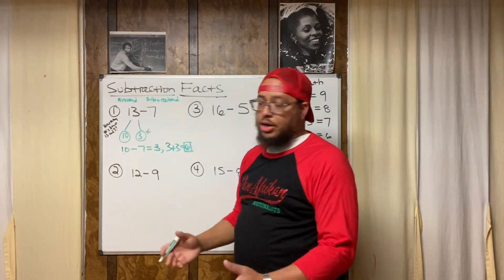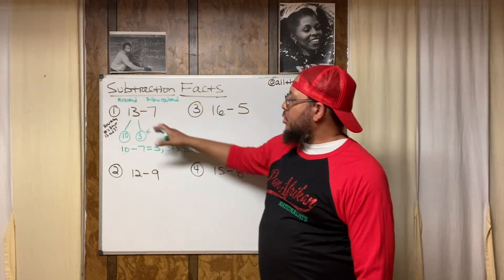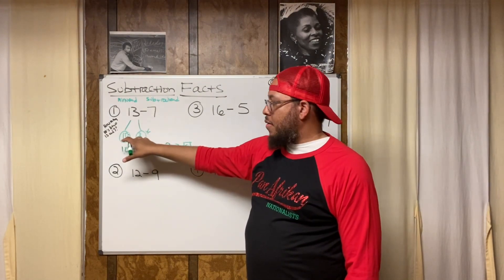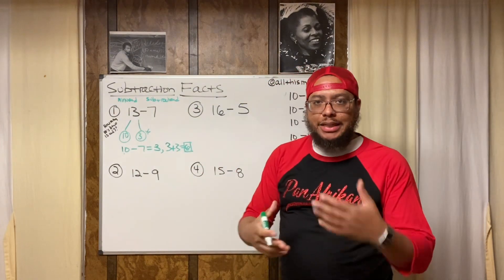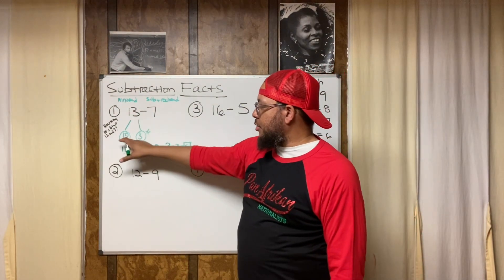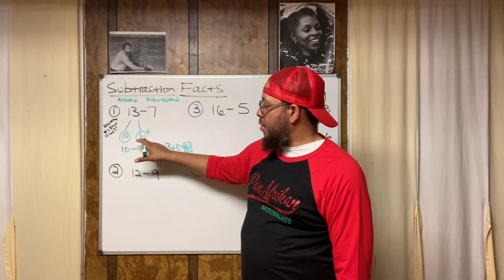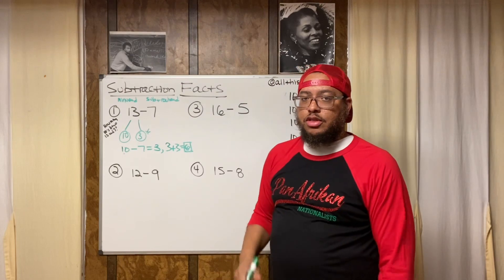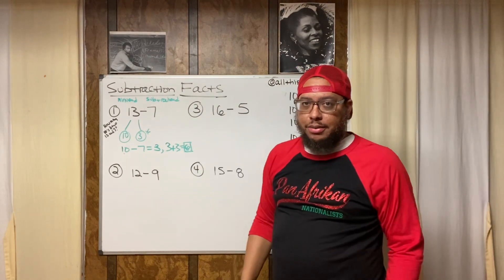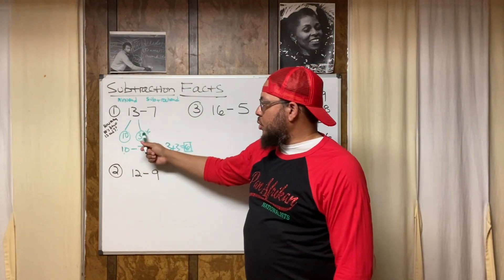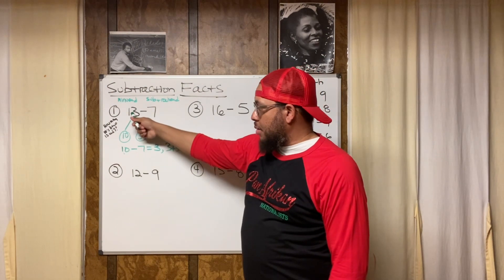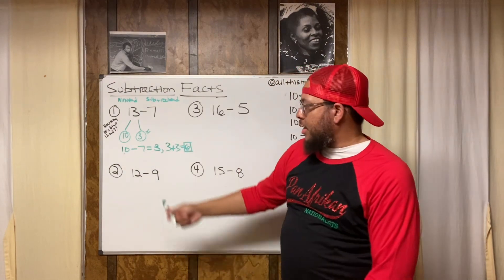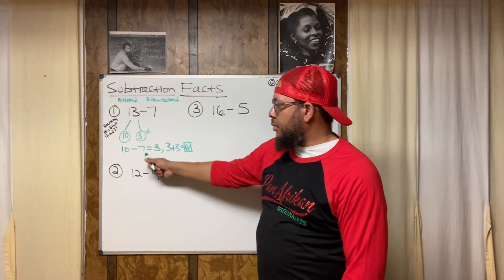Notice what we did: we broke the bigger number down into a number bond based on addition facts — 13 is 10 plus 3. Then we subtracted the second number from 10 to find that difference, and added it with the known difference between the original number and 10 to get the total difference.